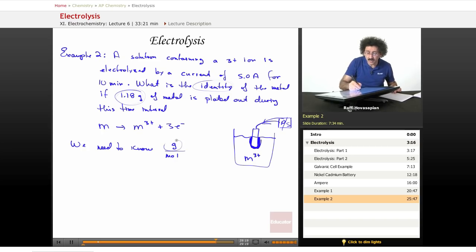So we need to know grams per mole. Well, we have the grams already. That's 1.18. What we need to know is how many moles of this metal are actually deposited. 1.18. So this is what we need.